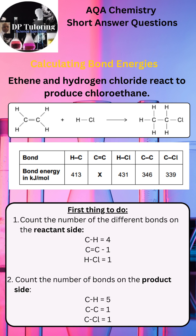The first thing to do is to calculate the number of the different bonds on the reactant and product sides. Please pause the video at this point and count the bonds so you have a full understanding. The total is calculated for you and is displayed on the screen.